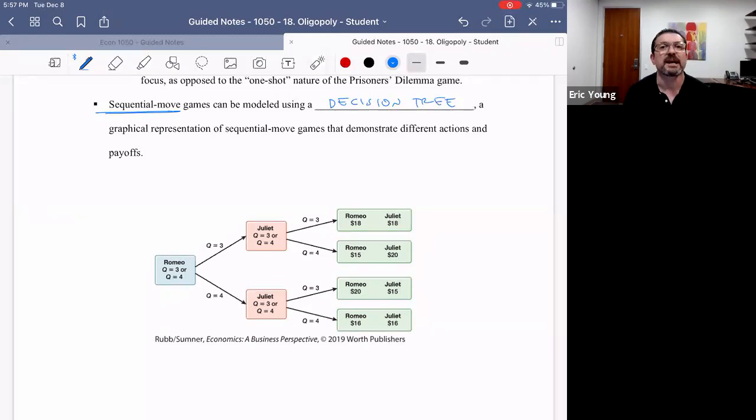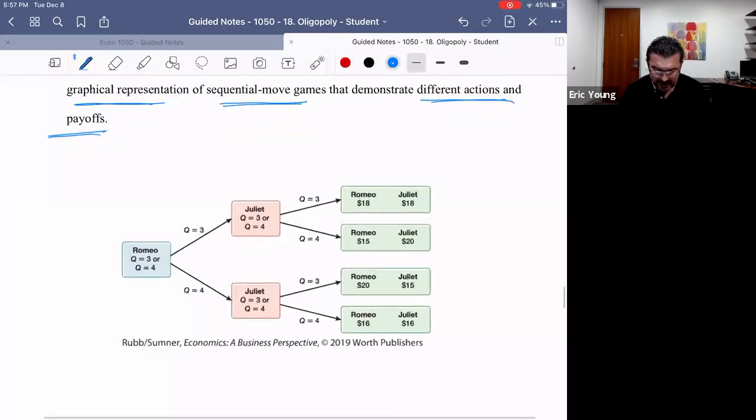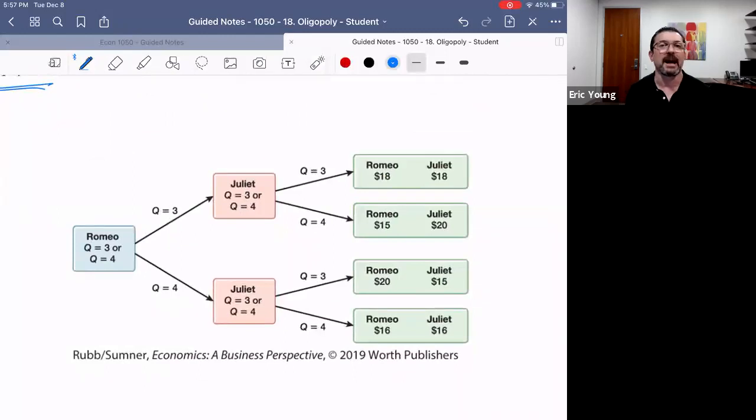A decision tree is a graphical representation of a sequential move game that will model out different actions and their payoffs. You have one right here—this is basically a decision tree that shows the same data as was given in the last video with Romeo and Juliet. Remember, they had to decide: do I make three or do I make four? In the last model, we assumed that the decisions were made simultaneously, so we put them in a payoff matrix.